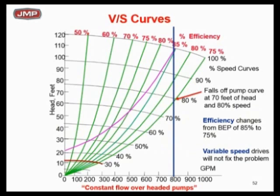Where is 70 feet of head going to land when your variable speed drive starts slowing the pump down? At 100% speed you don't need 110 feet — you only need 70 feet. So the VFD slows to 90%, then 80%, but look at that last green curve, which is at 75 feet. If you get below 80% pump speed, if you get below 70 feet of head, the pump falls off the curve — the pump dies, cavitation occurs. You've got a big problem. How do you fix it? You have to go throttle the pump discharge valve.